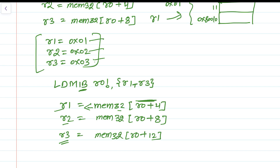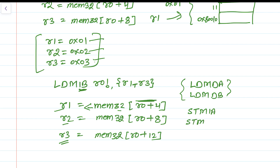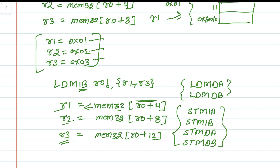Similarly, we can use LDMDA (Load Multiple Decrement After) and LDMDB (Load Multiple Decrement Before). In the same way, for store instructions we have STMIA (Store Multiple Increment After), STMIB (Store Multiple Increment Before), STMDA (Store Multiple Decrement After), and STMDB (Store Multiple Decrement Before). These four addressing modes can be used to traverse memory either forward or backward.